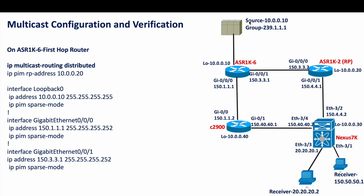This is the topology. We have a source 10.0.0.10 sending traffic for the group 239.1.1.1, and we have the first hop router as ASR 1K-6. ASR 1K-2 is going to act as an RP, with RP address 10.0.0.20 — the loopback address. Then it goes to a Nexus 7K device, and in between we also have a Cisco 2900. The receivers are connected at 150.50.50.1 and 20.20.20.2, both connected to the Nexus 7K. Then we have RP, then it goes to the source.